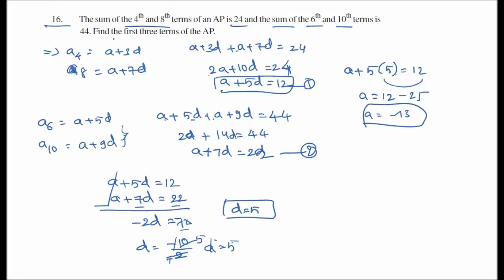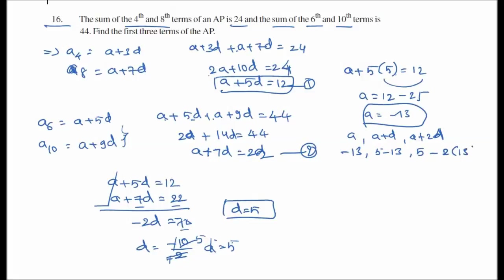So a equals negative 13 and d equals 5. The first three terms of the AP are: a equals negative 13, a plus d equals negative 8, and a plus 2d equals negative 3. So the series is: negative 13, negative 8, negative 3.